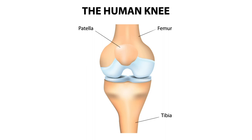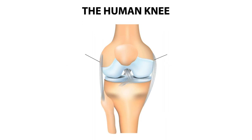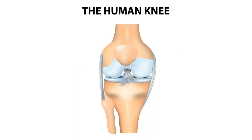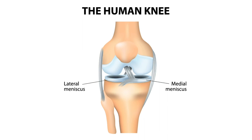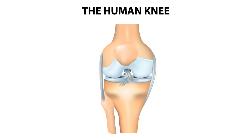These bones are connected to each other by ligaments, which help guide the movements of the joint. Tendons attach the muscles of the thigh and calf to the bones around the knee. The meniscus is the cushion of cartilage between the femur and tibia. In the healthy knee, these structures work together to move the joint.